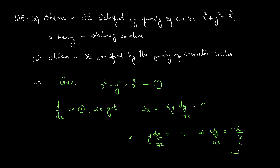Part a is solved. It was fairly straightforward. This is a differential equation of first order. Moving on to part b: obtain a differential equation satisfied by the family of concentric circles. Here, the equation of the family of curves is not explicitly given. We need to form the equation of the family of concentric circles.